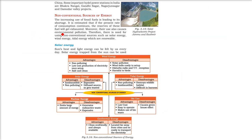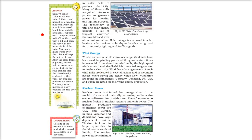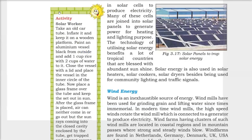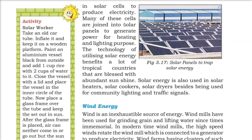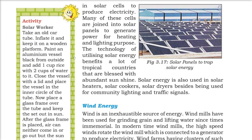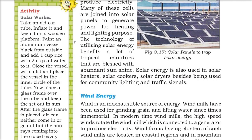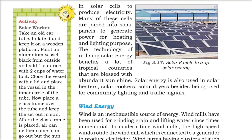Solar energy uses the sun's heat and light energy, which we can feel every day. Solar energy trapped from the sun is used in solar cells to produce electricity. Many cells are joined into solar panels to generate power for heating and lighting. This technology benefits tropical countries blessed with abundant sunshine. Solar energy is also used in solar heaters, solar cookers, and solar dryers, besides community lighting and traffic signals. Kochi airport in India is the first airport that uses only solar energy.